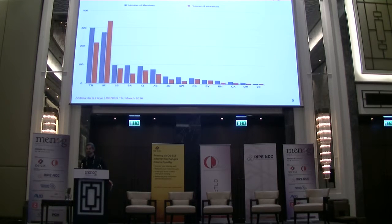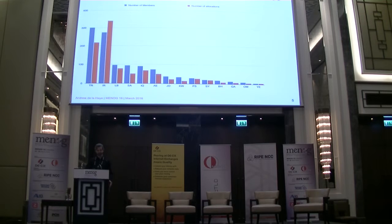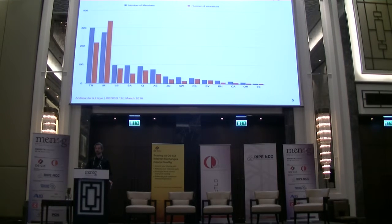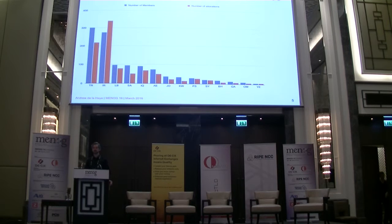From the region here, the MENA region, you can see all the countries in the graph underneath. There are many LIRs that have already received their last /22. You can see that the number of members is usually more than the amount of blocks, except in one country — Iran. That difference is because there are a couple of LIRs who have transferred /22s from other LIRs into their registry. So it looks like there are a lot more /22s in Iran than there should be, but that's perfectly normal.